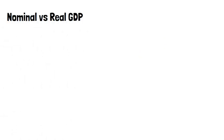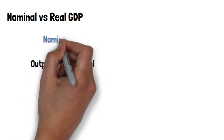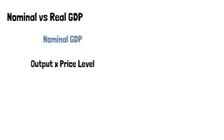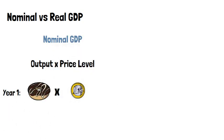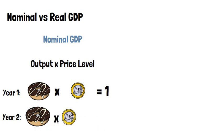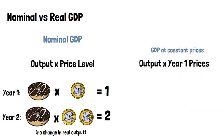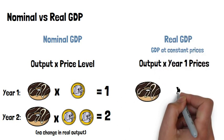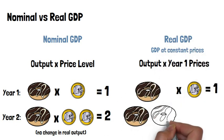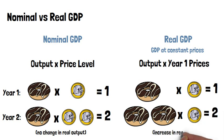We can look at GDP as the result of the quantity of goods and services produced, multiplied by the price level. This is called nominal GDP. Here, we see that if GDP increases as a result of an increase in the price level, then the standard of living in the country has not actually changed. That's why economists calculate GDP at constant prices, or real GDP. Changes in real GDP are the result of increases in real output, and not the result of price inflation.